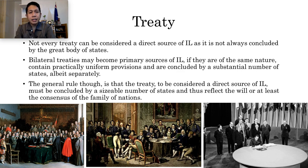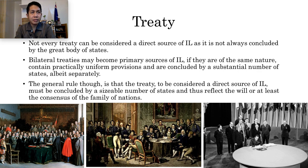Let's talk about treaty. Not every treaty can be considered as a direct source of international law, as it is not always concluded by a great body of states. Examples are bilateral treaties between two countries. Therefore, an economic treaty between Japan and the Philippines may not be considered as a direct source of international law. Bilateral treaties may become primary sources of international law if they are of the same nature, contain practically uniform provisions, and are concluded by a substantial number of states, albeit separately. Extradition treaties are good examples of bilateral treaties which have become a source of international law.